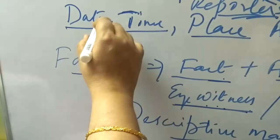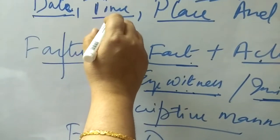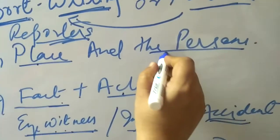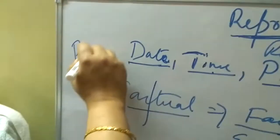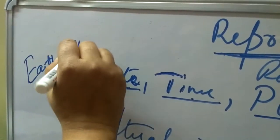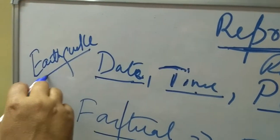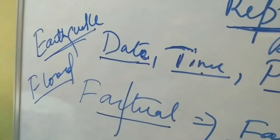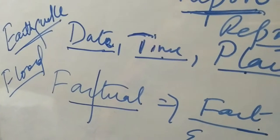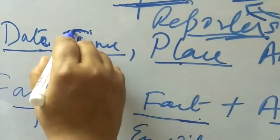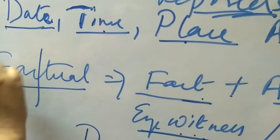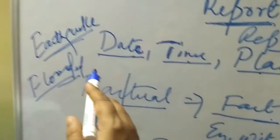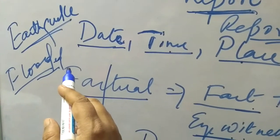Your first line should mention: on which date did this happen, at what time did it happen, at which place did it happen, and to which people did it happen. Suppose you need to write the report of a flood situation. Recently a flood situation occurred in Hyderabad — most of the people lost their houses and everything due to this flood situation. These are natural happenings, natural calamities due to climatic disasters.